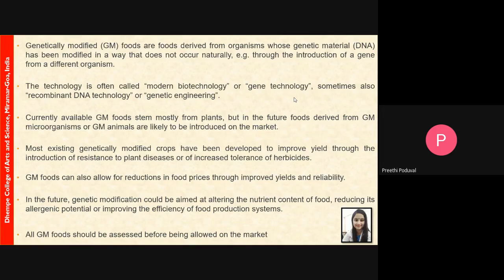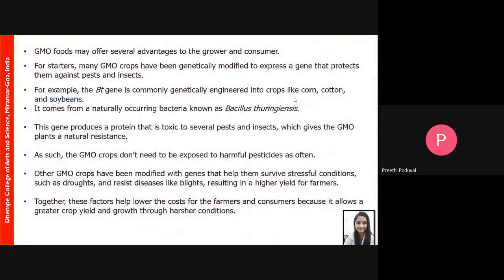GM crops are modified so that plants grow with added nutritive values, greater produce, pest resistance, herbicide resistance, insecticide resistance, and drought resistance. These properties are used extensively via genetic engineering to improve yields and reliability. In the future, genetic modification could be aimed at altering the nutrient content of food, reducing allergenic potential, and improving the efficiency of food production. All GM foods are thoroughly assessed before being allowed into the market.